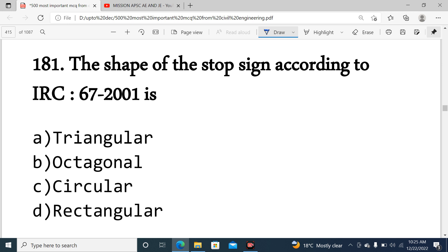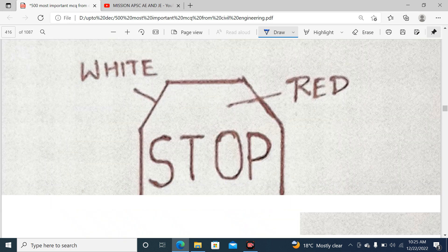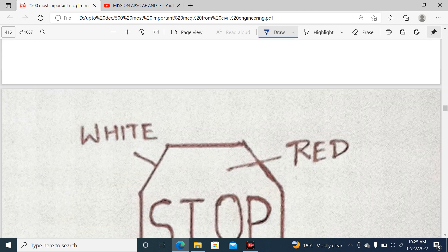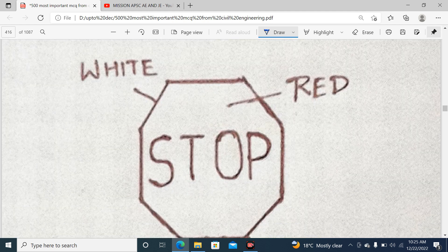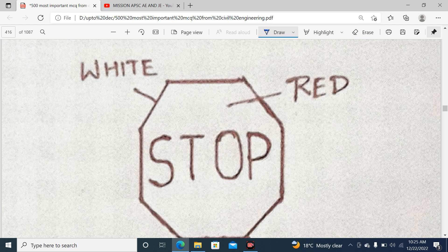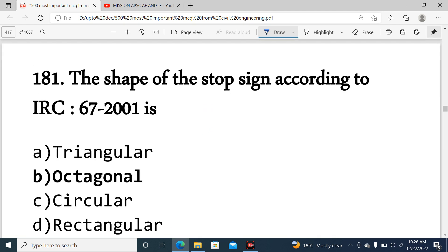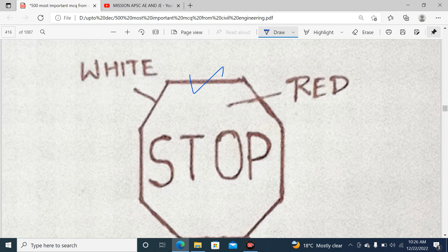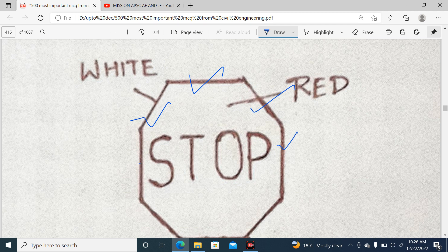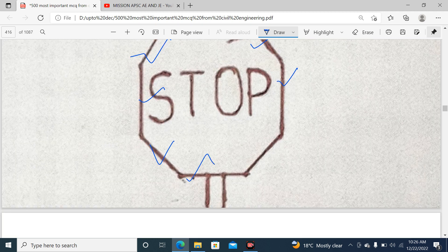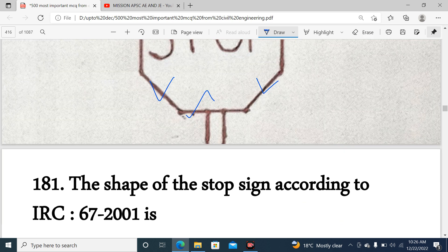Question 181: The shape of the stop sign according to IRC 67-2001. The stop sign has eight sides, so it is octagonal. Option B is correct.